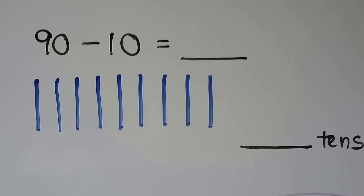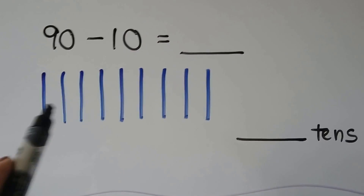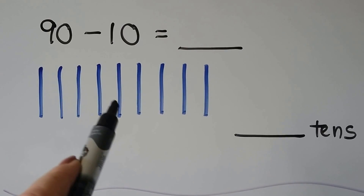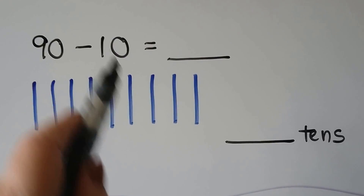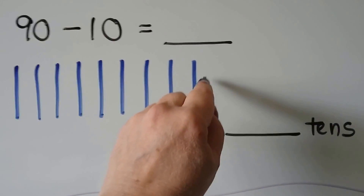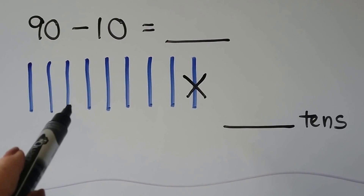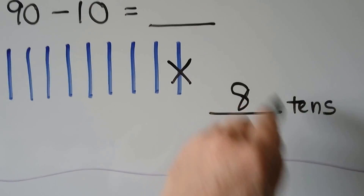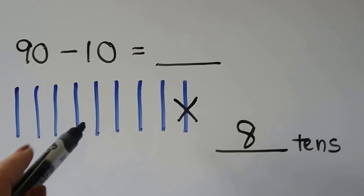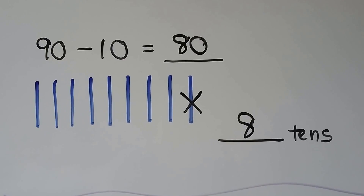Let's try it again. We have ninety minus ten. We can make nine blue bars for nine tens: ten, twenty, thirty, forty, fifty, sixty, seventy, eighty, ninety. We need to take away ten, so we're going to take away one ten. We can count how many tens are left: one, two, three, four, five, six, seven, eight. Eight tens are left. Eight tens are equal to eighty. Ninety minus ten is equal to eighty.